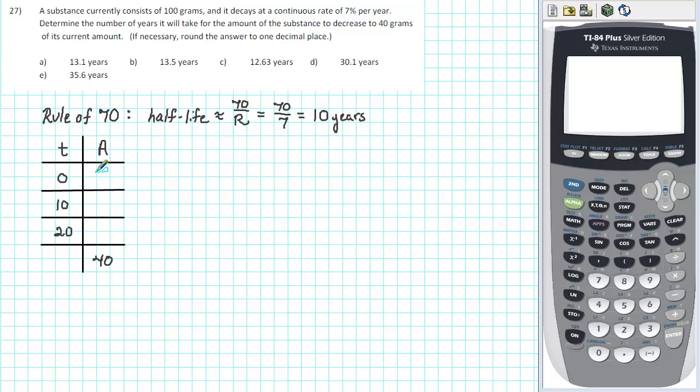Initially there were 100 grams of the substance. The half-life tells us that after 10 years there will be approximately 50 grams remaining. After another 10 years there will be half of 50 or 25 grams remaining. We are trying to determine how long it will take for 40 grams to be remaining. Well 40 is between 25 and 50 so that tells us that our answer is somewhere between 10 and 20.